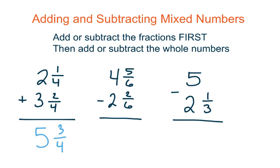For the next problem, notice it's a subtraction problem. We look at our fractions first and we see that 5 sixths is in fact greater than 2 sixths, so we can subtract. 5 minus 2 gives me 3 sixths, and then 4 minus 2 gives me 2, and that one is done as well.